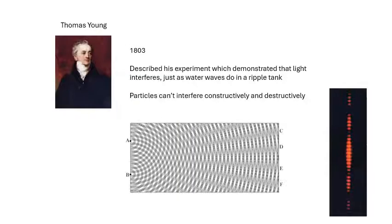Basically, now 1803, so we're talking a hundred years later, Thomas Young, the cavalry has come. Thomas Young described his experiment that demonstrated that light interferes just as water waves do in a ripple tank. You get constructive and destructive interference. Thomas Young demonstrated that light does the same thing, and obviously we're talking about the double slit experiment.